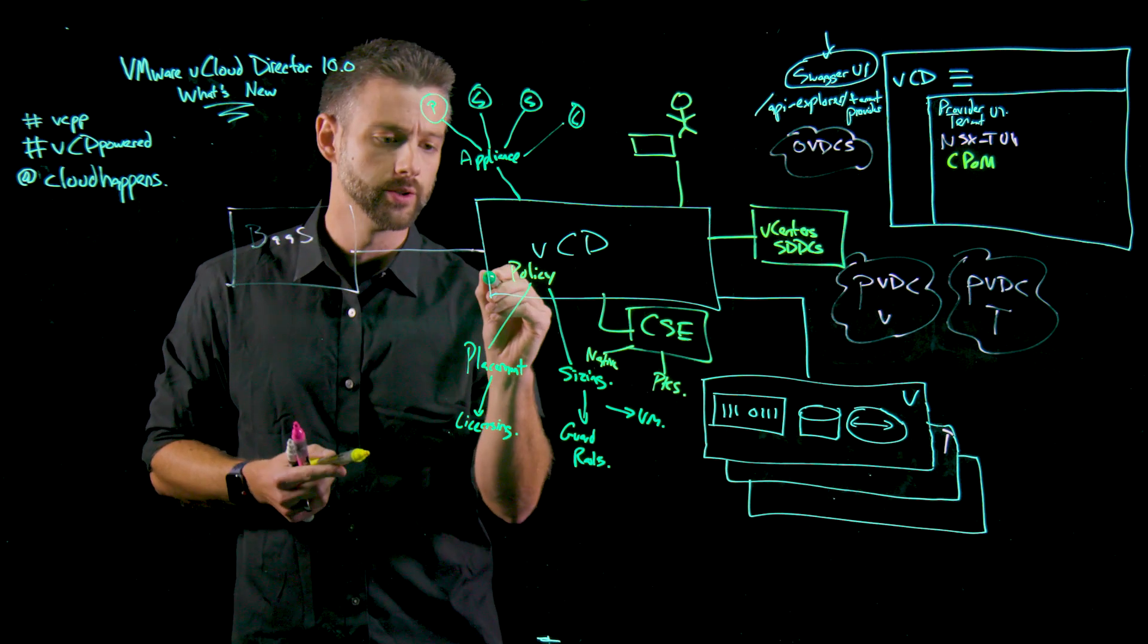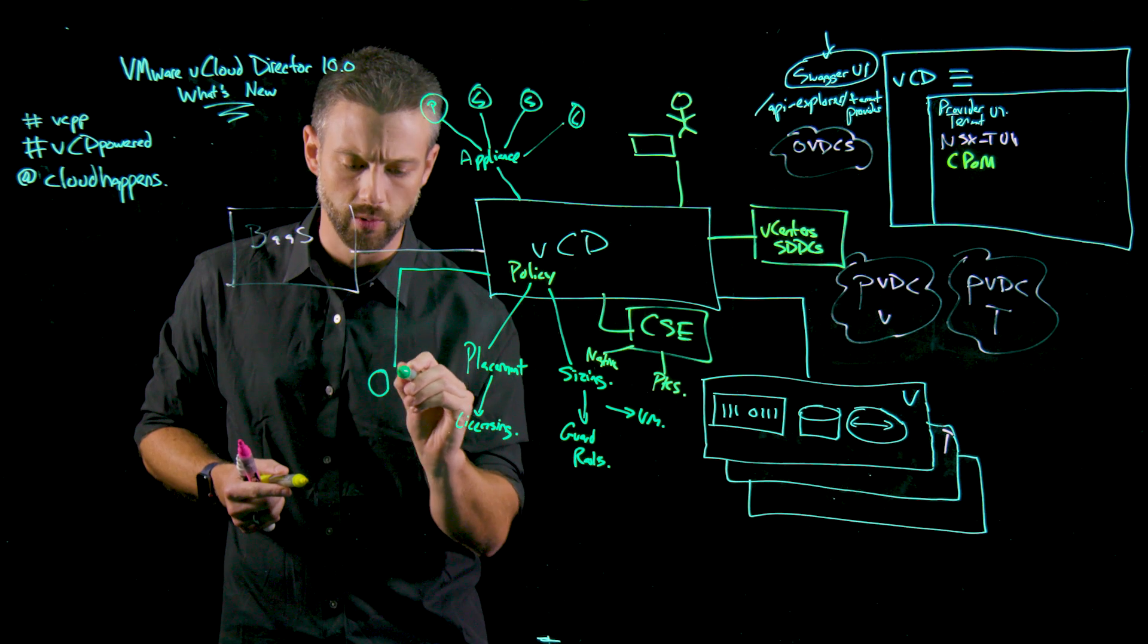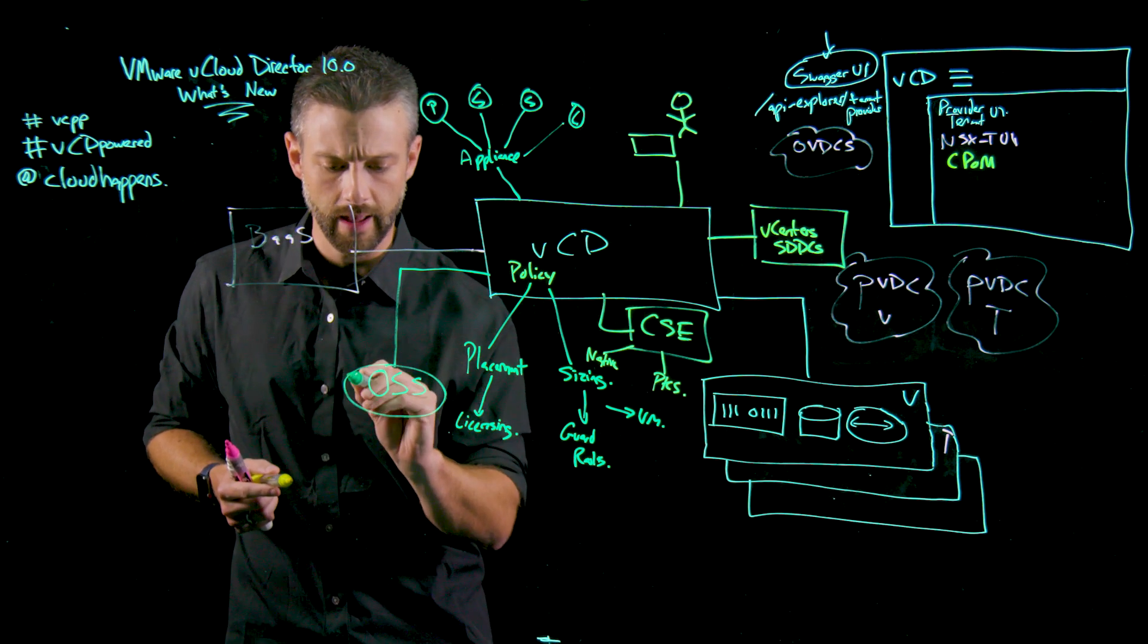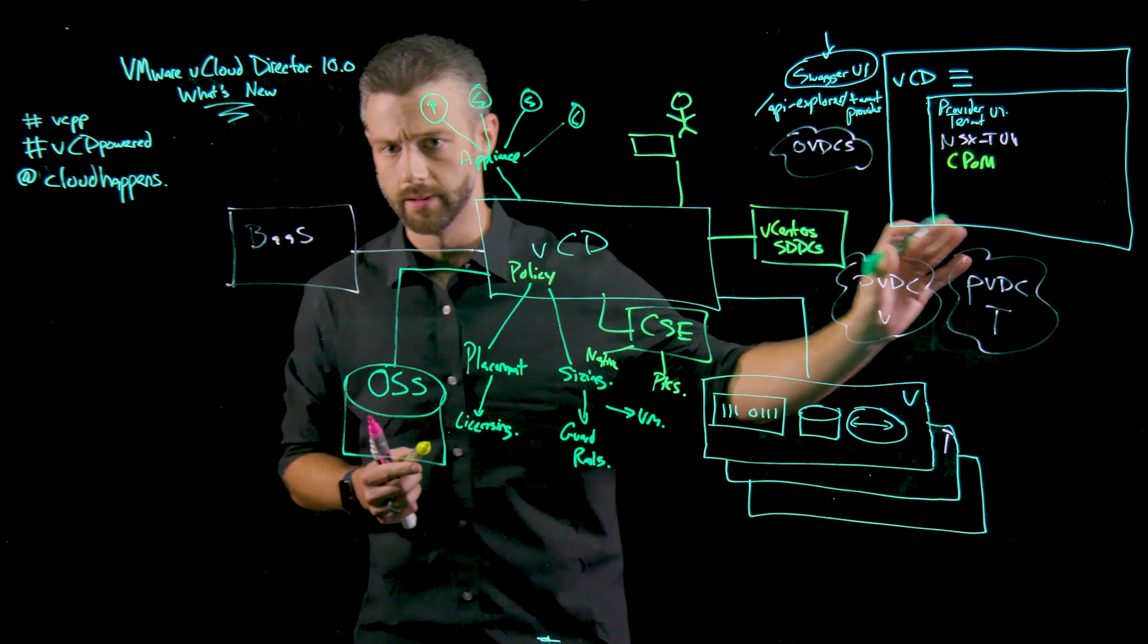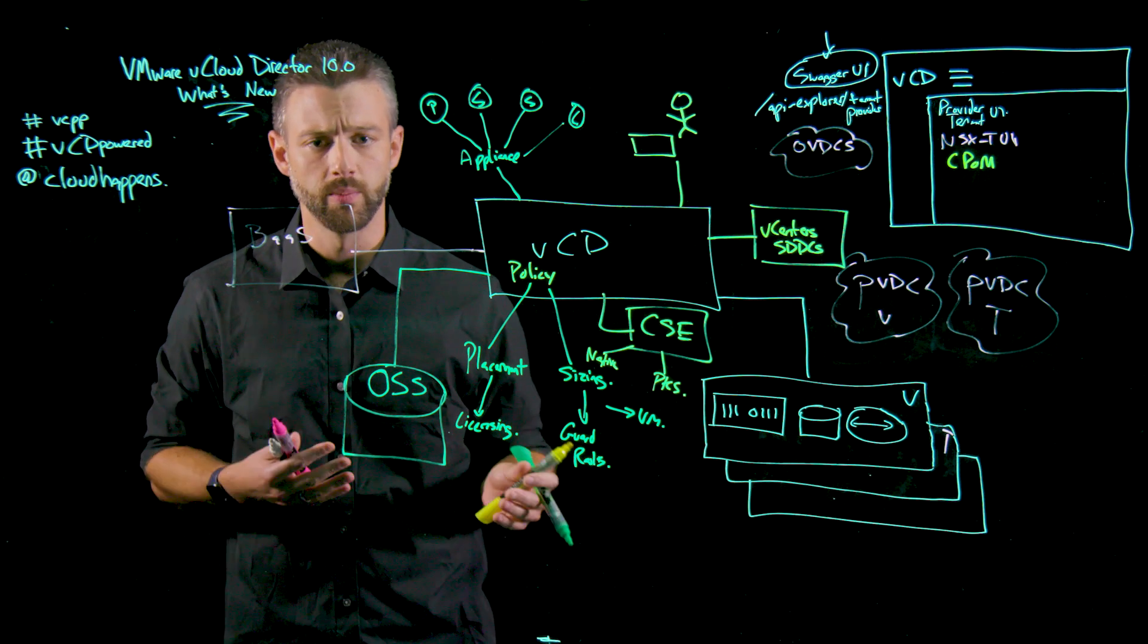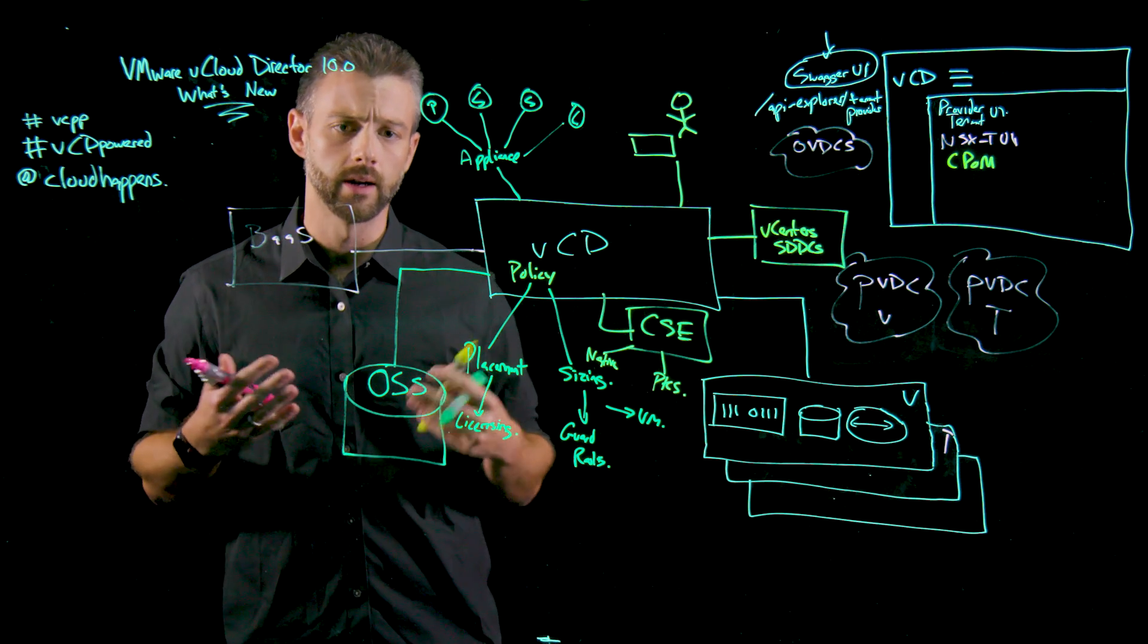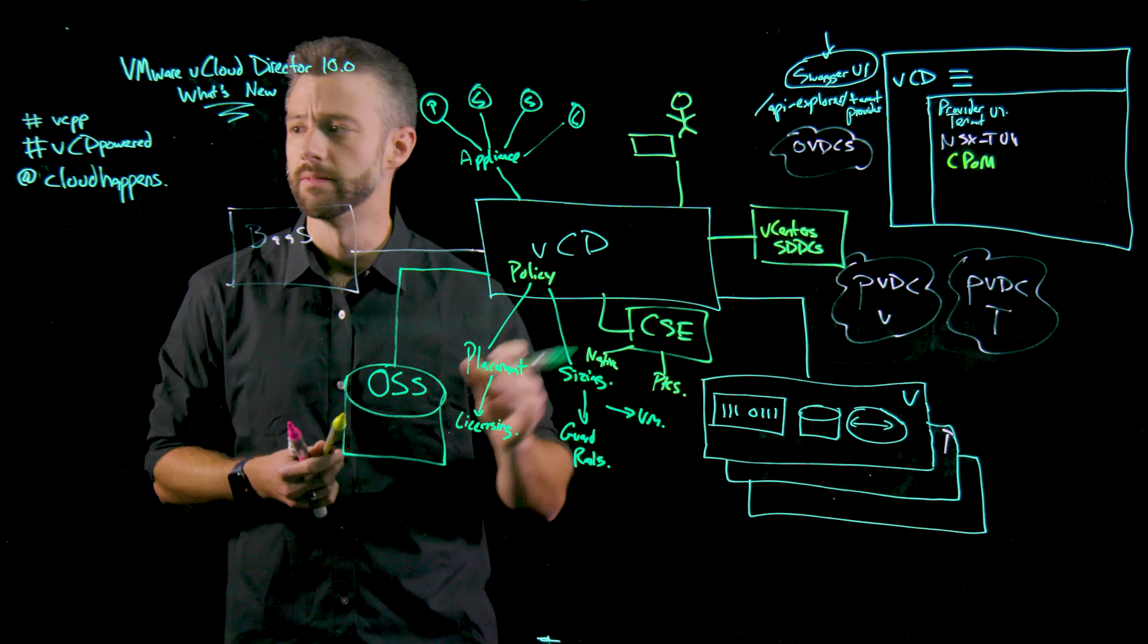And speaking of another very interesting addition to vCloud Director is the object storage services. So object storage services provides us an on-ramp to providing object services to any tenants within the VCD interface. Today, this is backed by Cloudian, but this is using a S3 provider. And one of the great things about working with this is providing an on-ramp to additional storage services built into vCloud Director.